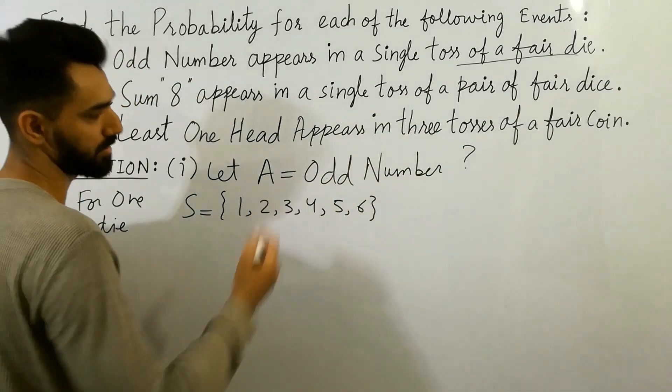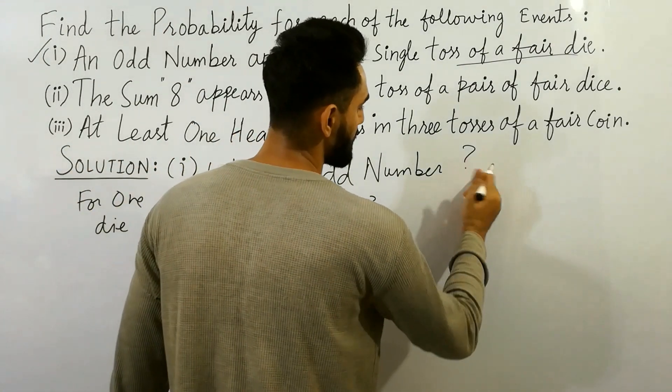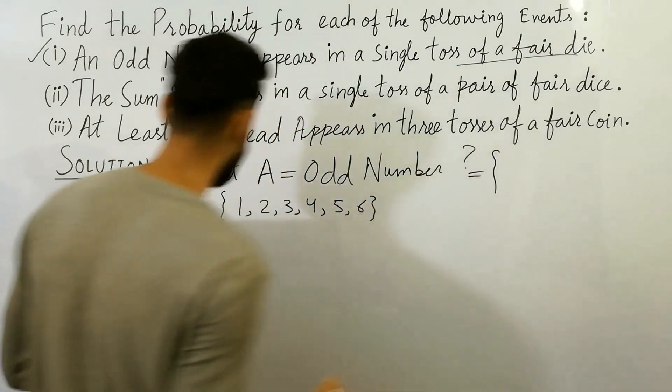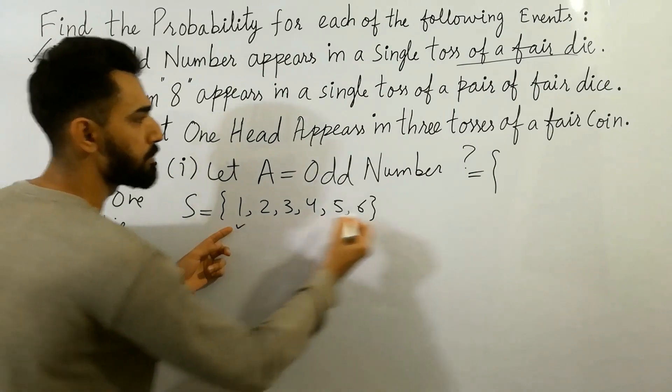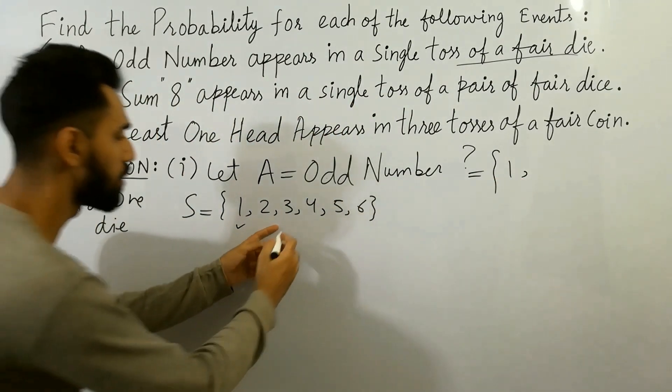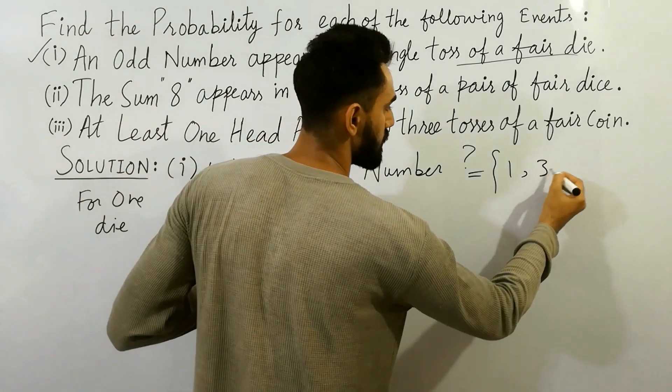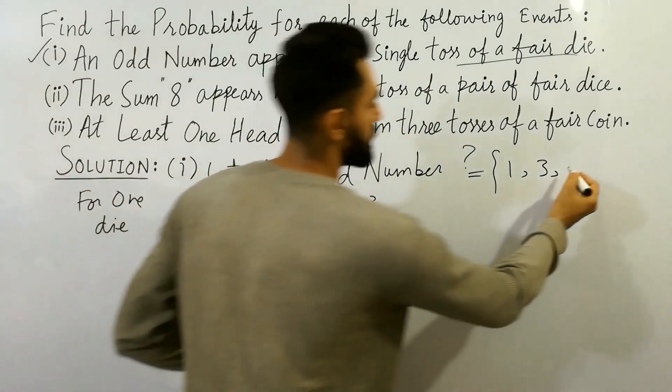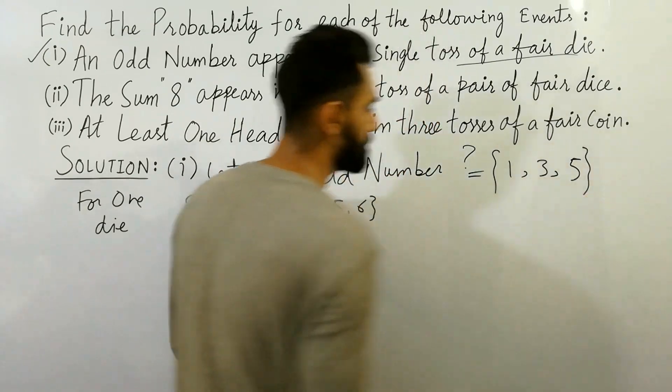But what is odd number? Very simply, odd number shows here. One is the odd number we put here. Simply, very easy. Three is the odd number we put here. Five is the odd number we put here. So this is the event.